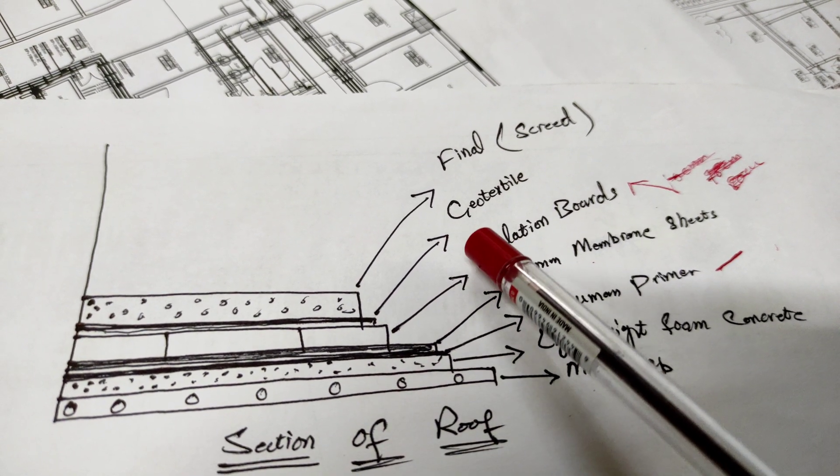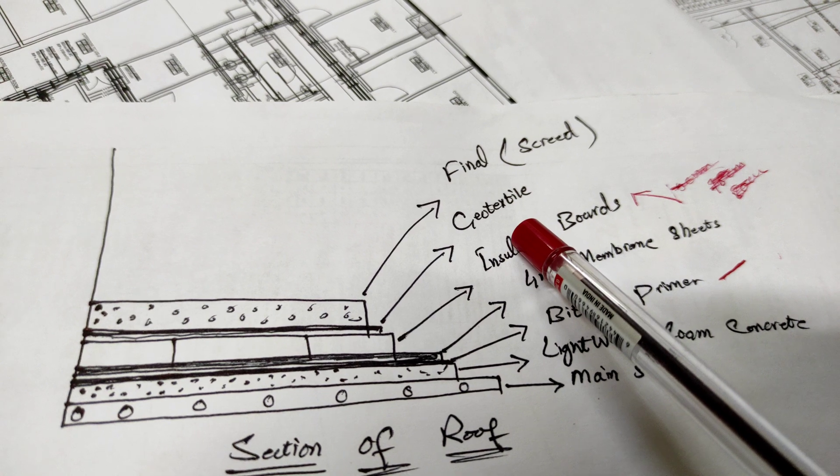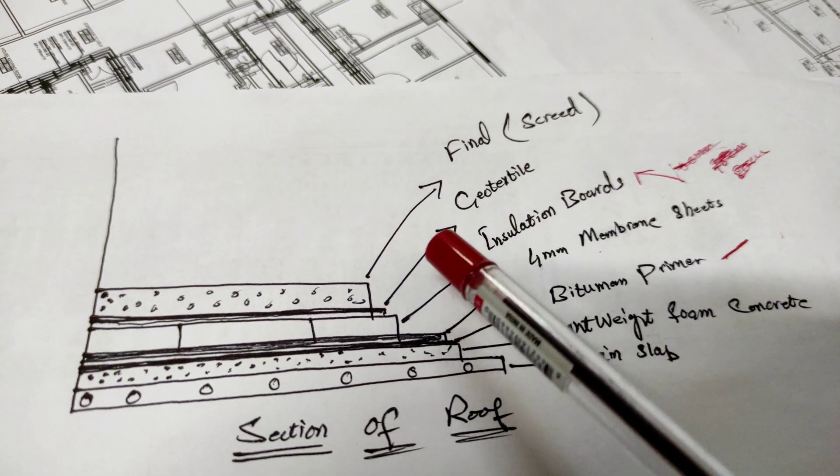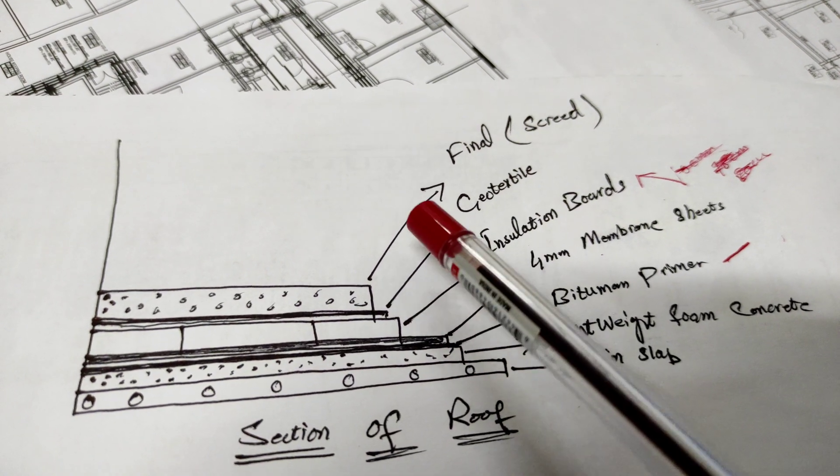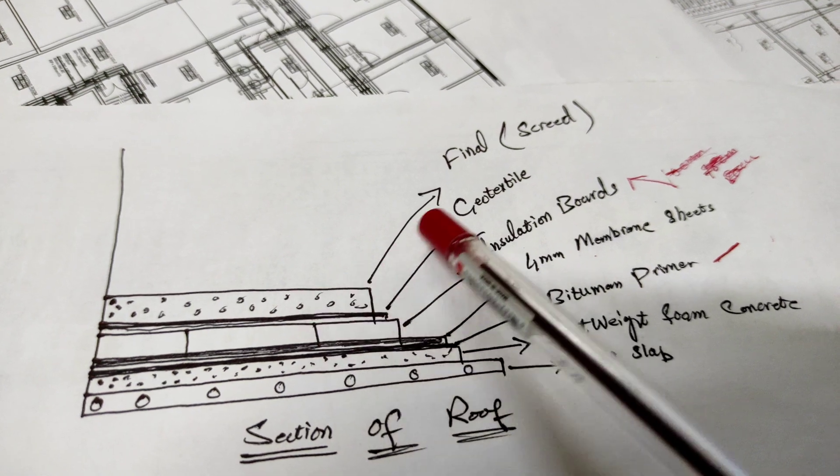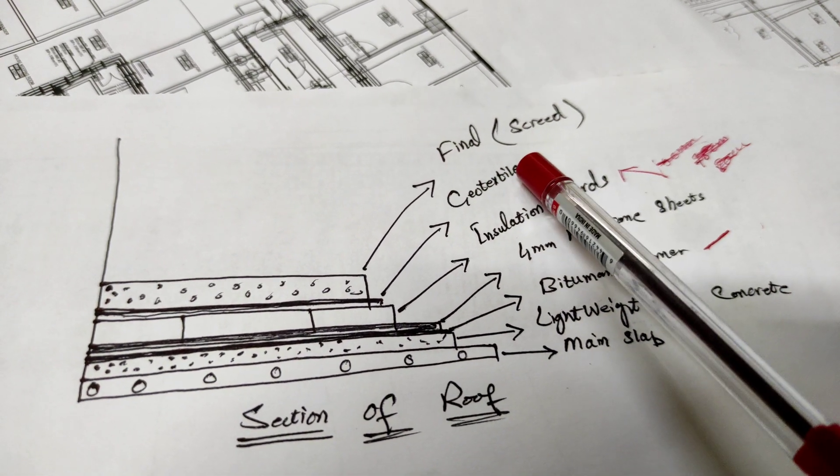We are using 100 GSM. I will tell you how many GSMs are available in the market. After installing this, we will cast final screed. This is the final step. After casting screed, we can make finished floor level on top of the roof.